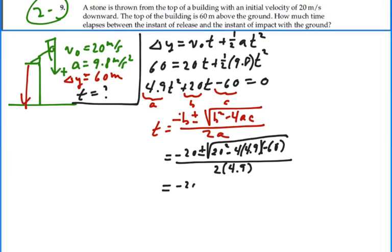It's negative 20 plus or minus. In the radical, we have 20 squared, 400, minus minus, so that's going to be a plus. 400 plus 4 times 4.9 times 60 is 1576. Take the square root. That is 39.7 over 9.8.